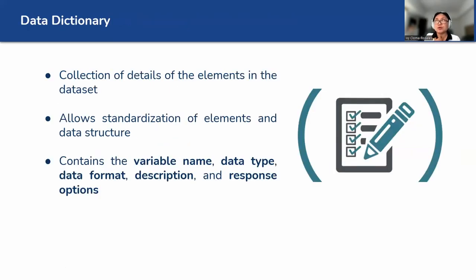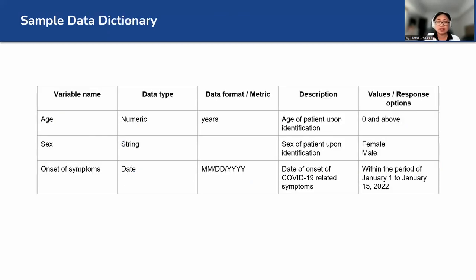So how do you avoid those kinds of errors, which are preventable? One way is having a data dictionary, which will allow standardization of elements and data structure. It contains the variable name, data type, data format, description, and response option. So it looks something like this: variable name, data type, data format, description, and what are the response options.